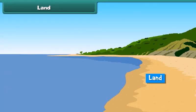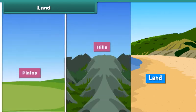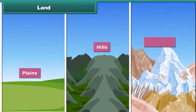Land is that part of Earth's surface that is not covered with any water body. Plains, hills and mountains are the examples of land. Come, let us learn about them.